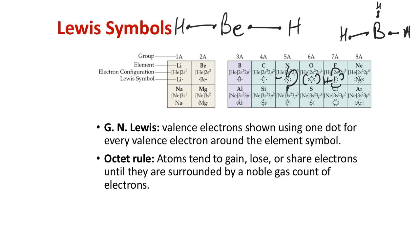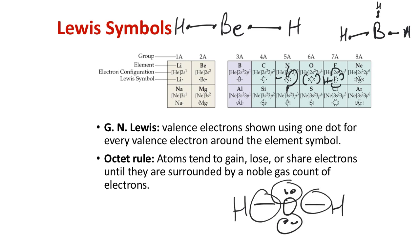The octet rule: atoms tend to gain, lose, or share electrons until they're surrounded by the noble gas count of electrons. Hydrogen picks up that count with two electrons, and oxygen picks up eight electrons surrounding it through covalent bonding. Oxygen could also pick up two electrons and form the 2- ion if it were to go ionic.